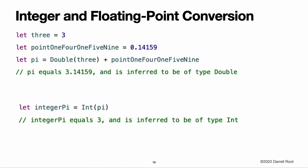Integer and floating point conversion. Conversions between integer and floating point numeric types must be made explicit. The value of a constant 3 can be used to create a new value of type Double so that both sides of the addition are of the same type. Without this conversion in place, the addition would not be allowed. Floating point to integer conversion must also be made explicit. Floating point values are always truncated when used to initialize a new integer value. This means that 4.75 becomes 4, and negative 3.9 becomes negative 3. The rules for combining numeric constants and variables are different from the rules for numeric literals. The literal value 3 can be added directly to the literal value 0.14159 because number literals don't have an explicit type in and of themselves. Their type is inferred only at the point that they are evaluated by the compiler.